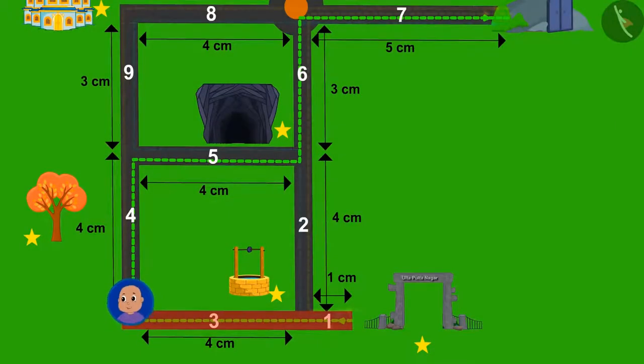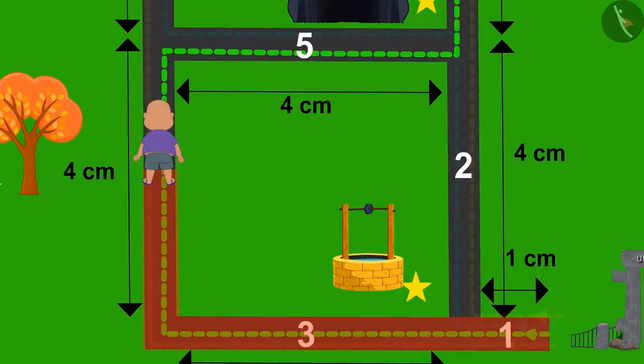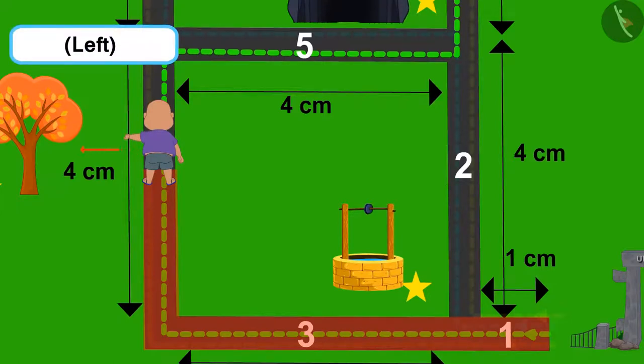Now, Bablu tried to go out of road number 3. If Bablu is on road number 4, then which side is the magical tree? The magical tree is on the left-hand side of Bablu, which means it would be on the left.